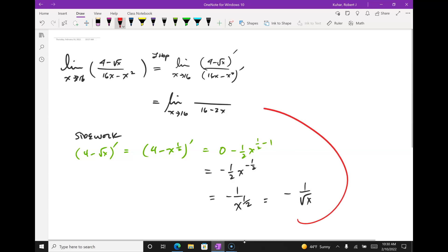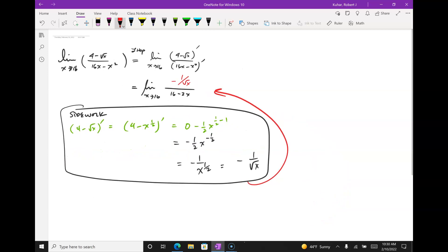Negative exponent means reciprocal. Square root exponent means, 1 half power means square root. So, now I'm going back to my limit. So, this is my side work. I like to box it off. And then I get negative 1 over 2 square root of x over 16 minus 2x. I could simplify this. It doesn't do much if I do. So, I'm going to be lazy on this one. And I'm just going to plug in.